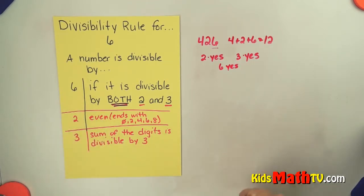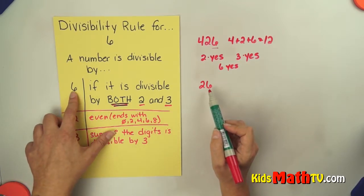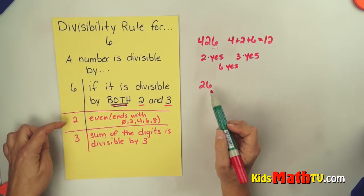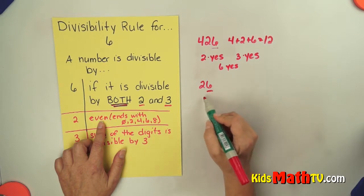Try another example. Let's try the number 26. So 26, we're going to see if it's divisible by 6, meaning it's divisible by both 2 and 3. So first of all, is it even? Yes, it's even, so it is divisible by 2.